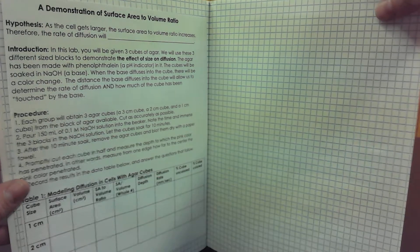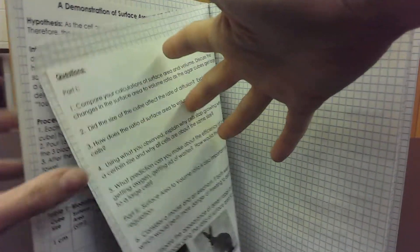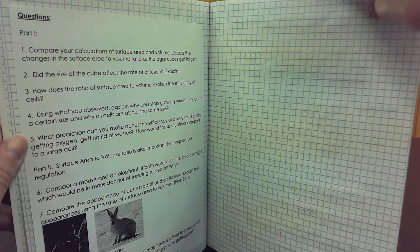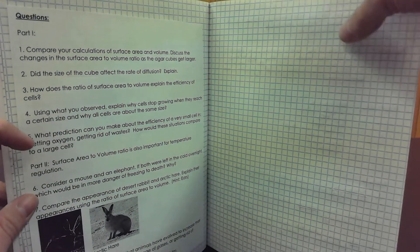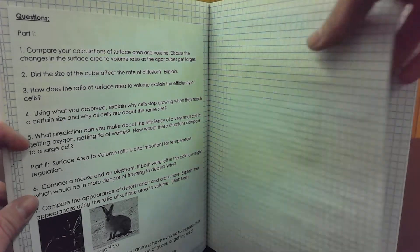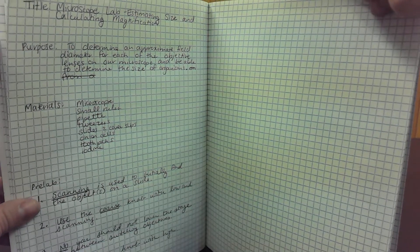On the next page will be the demonstration of surface area to volume ratio. Leave the right side blank. The questions to that lab go on the next page and it has the bunnies on it. This right side is blank.